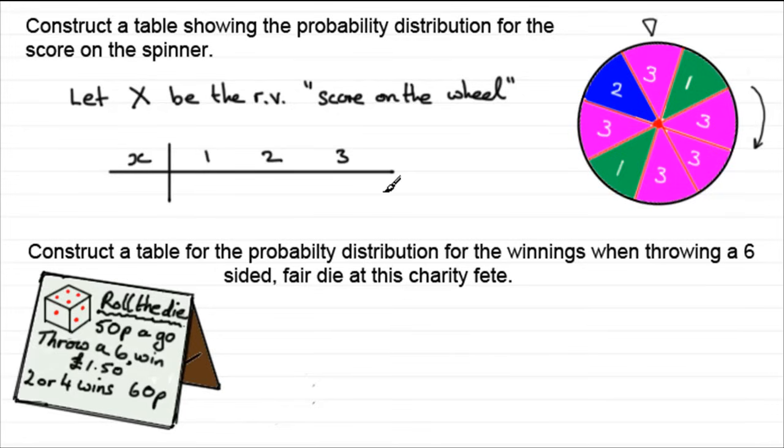Now on this second row, what we do is we work out what the probability of obtaining any of these particular observed values. And we write this as the probability of capital X, which remember stands for the score on the wheel, equals any one of these observed values, 1, 2 or 3. So we write it with a small x. So what is the probability of scoring 1? Well there's two sections here out of 8. So we know that it would be 2 out of 8. I won't bother cancelling that down to a quarter, just leave it as 2/8.